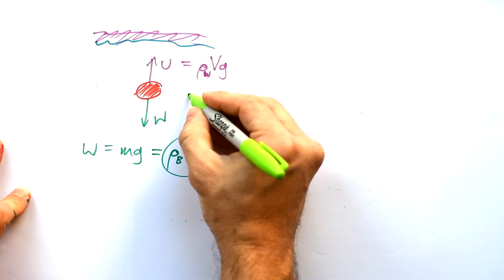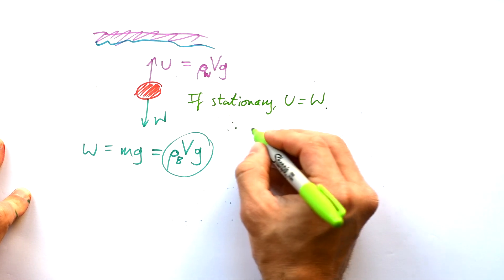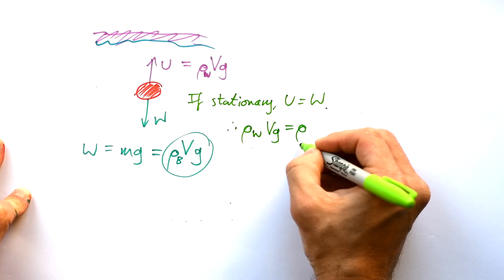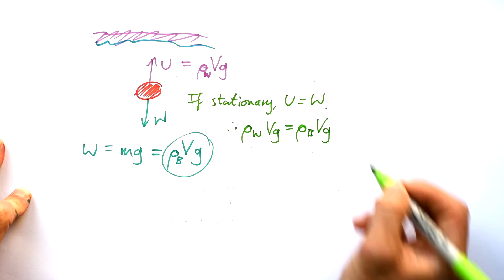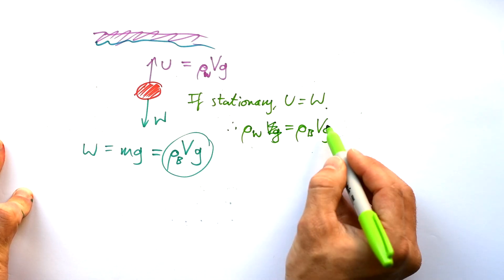So, if this ball is stationary, then we know that there is no overall force. So, the upthrust must be equal to the weight. So, we can say ρ_W Vg, weight of the water, and the upthrust is equal to ρ_B Vg, the weight of the ball. V and g cancel because they're the same.